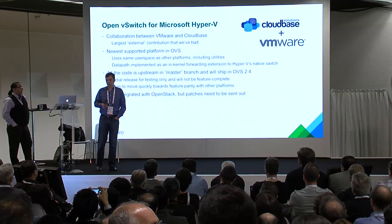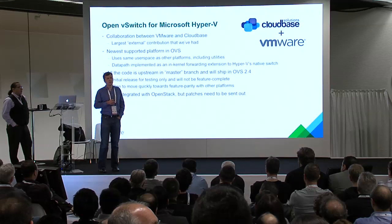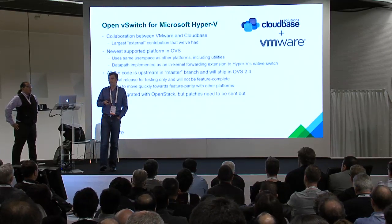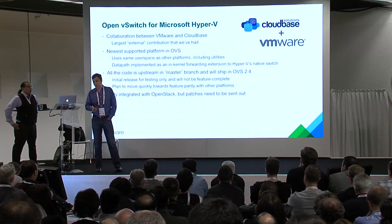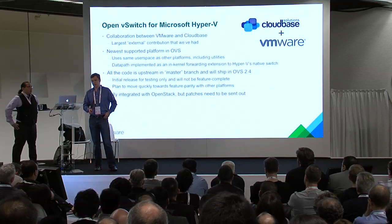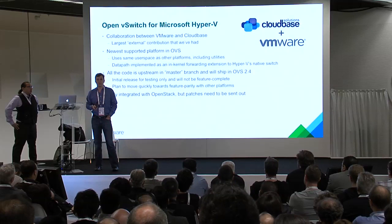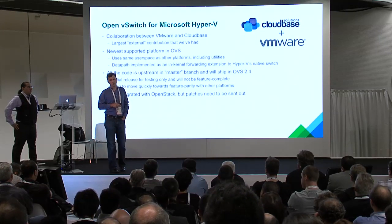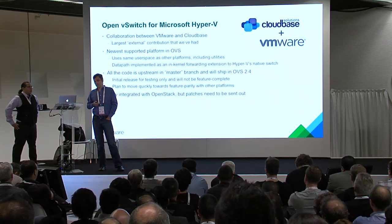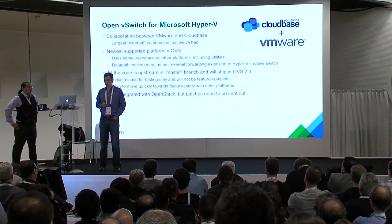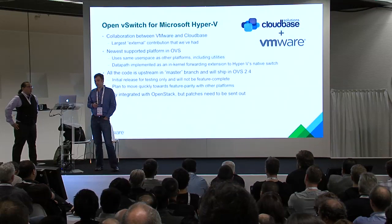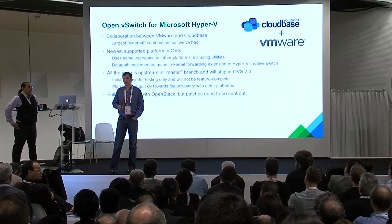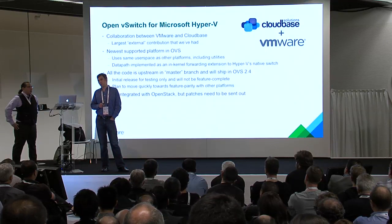It's the newest supported platform, using the same user space. OVS vSwitchd — where most of the OVS switching code resides — is exactly the same on the platforms, except now it's a Windows binary. All the utilities — ovs-ofctl, ovs-dpctl, and ovs-vsctl — are identical except now they're Windows binaries. The data path is implemented as an in-kernel forwarding extension to Hyper-V's native switch, so performance should match that of a native switch on Hyper-V. All the code is upstream in the master branch and will be included in OVS 2.4. The initial release is not feature-complete yet, so I'd only recommend using it for testing purposes. All the code for making it work with OpenStack has been done, but it hasn't been sent for review.